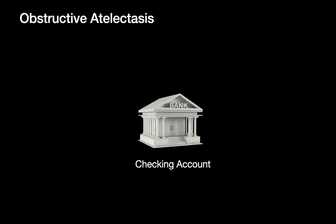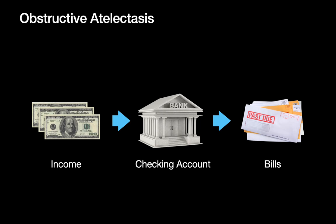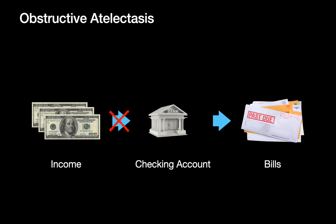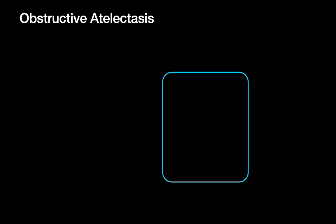The third form is obstructive atelectasis. Use the analogy of a checking account running at steady state — money comes in and money goes out. If you lose your income and can no longer replenish the account, you still have to pay bills and the balance dwindles. Similarly, if a lobar bronchus is occluded, gas continues to diffuse from the airspaces into the bloodstream, but can no longer be replenished, and the lobe becomes progressively denser and smaller.